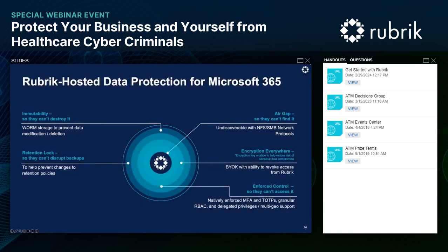Rubrik data protection for Microsoft 365 within Rubrik Security Cloud is secure by design. We have an air gap to help prevent discovery, access, or data compromise, with access control at every level — granular role-based access controls and credentials, mandatory natively enforced MFA and TOTP for all user logins. We have immutability by design, preventing any unauthorized read, change, encryption, or deletion by storing data in a proprietary format and verifying it with data integrity checks. We also have zero trust retention locks preventing anyone from removing retention policies through malicious expiration, cluster resets, or SLA modification, plus encryption key rotation to reduce sensitive data compromise risk.